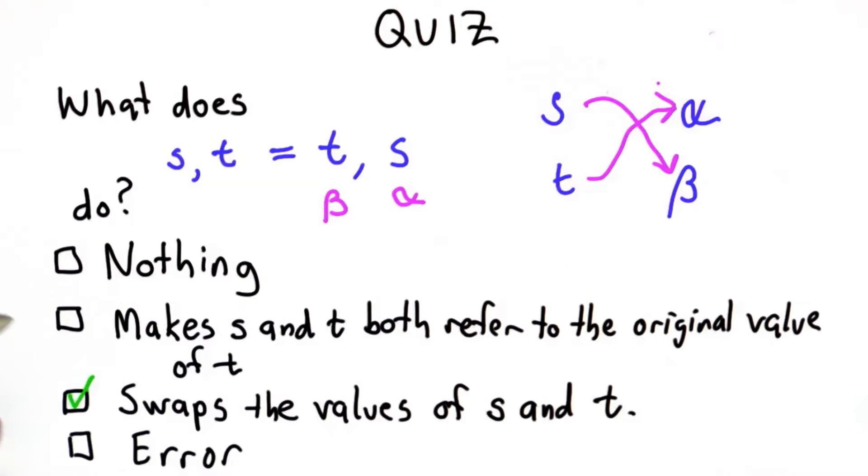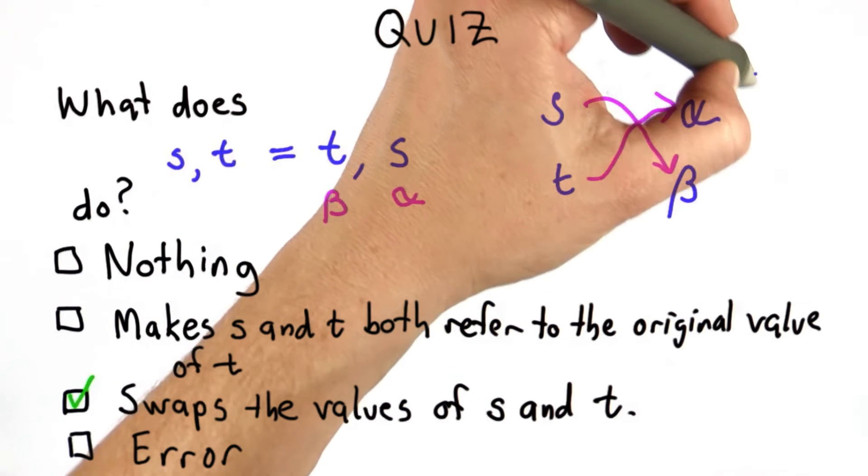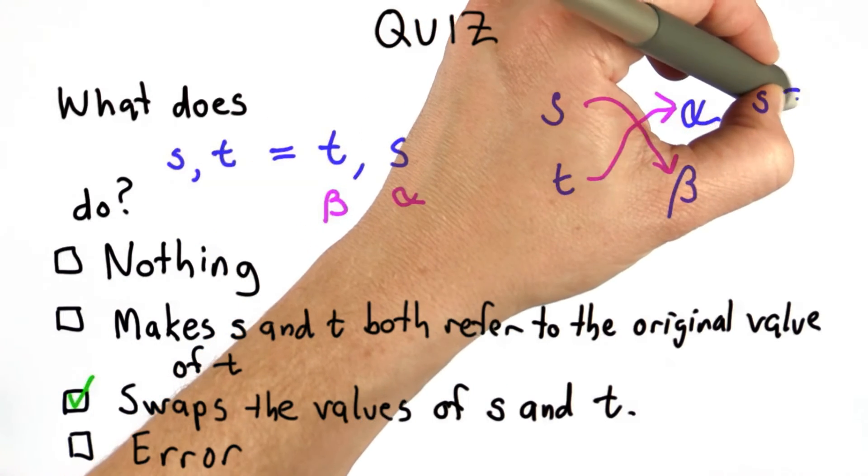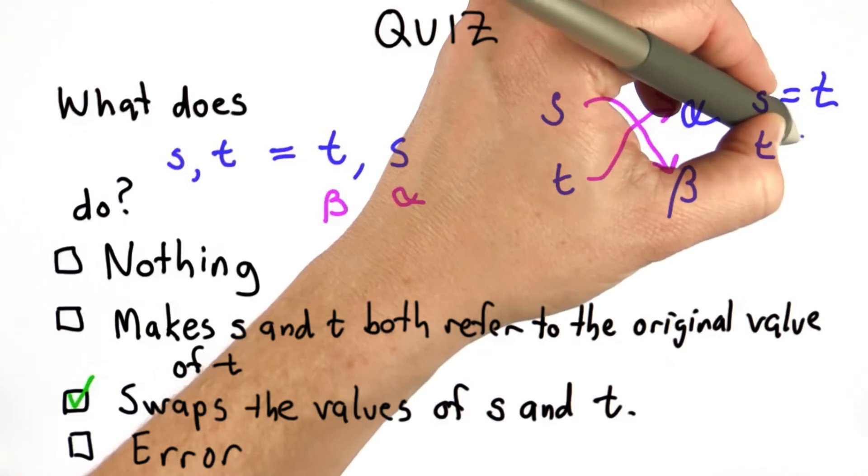So this has very different behavior than if we did two assignments like this. So if we tried instead doing assign T to S, and then assign S to T,